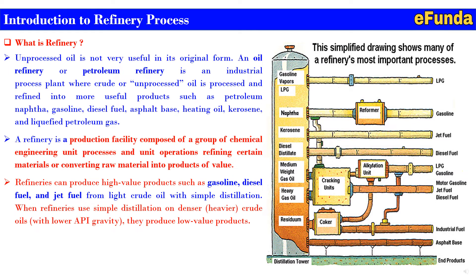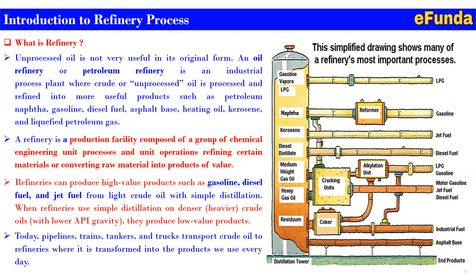When refineries use simple distillation on denser, heavier crude oil with low API gravity, they produce low-value products. Today, pipelines, trains, tankers, and trucks transport crude oil to refineries where it is transformed into the products we use every day. This covers the introduction of the refinery, and further in the video we will see the details of each process.